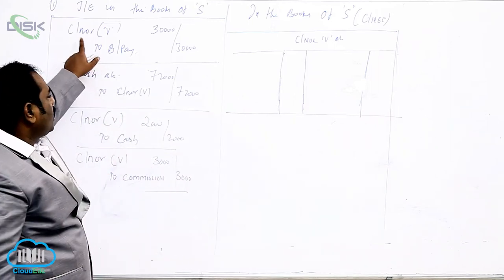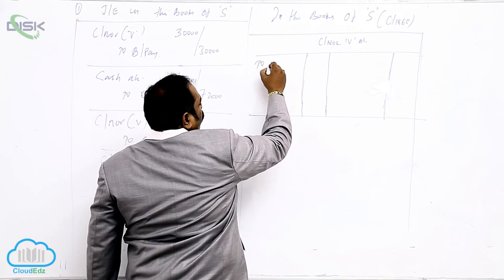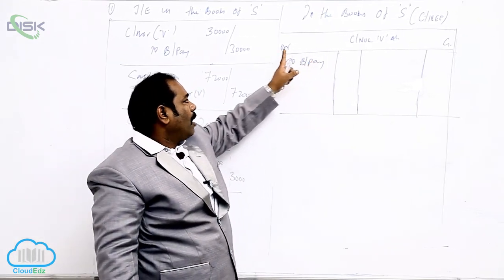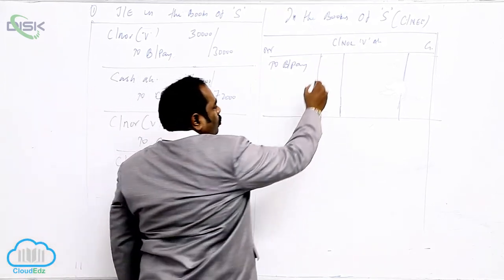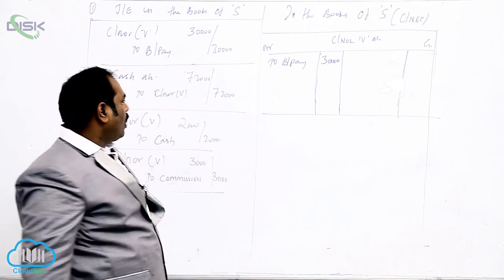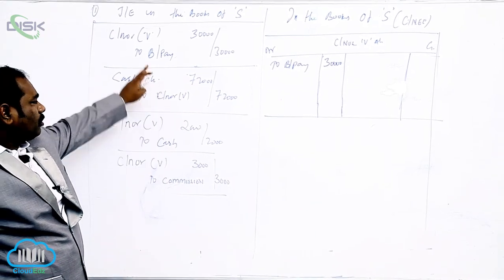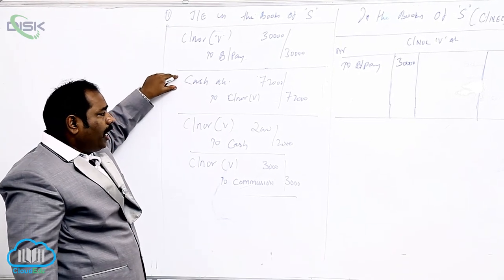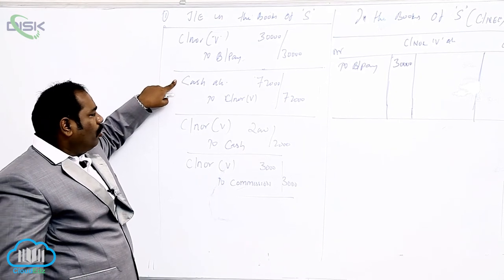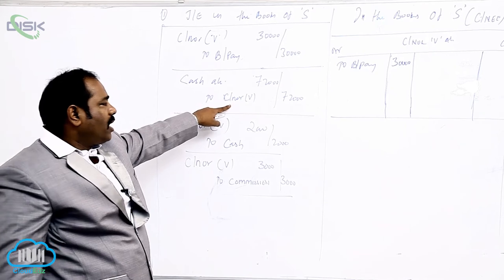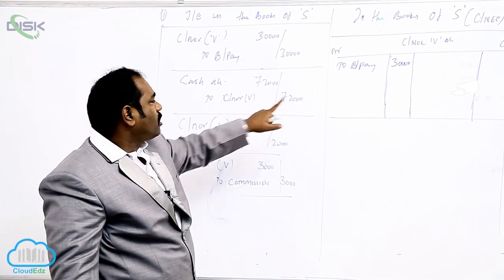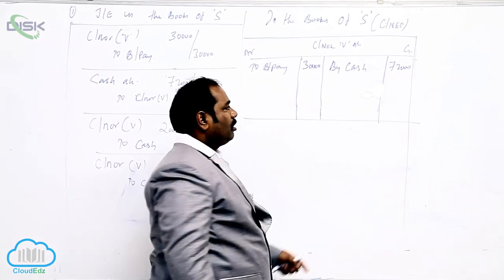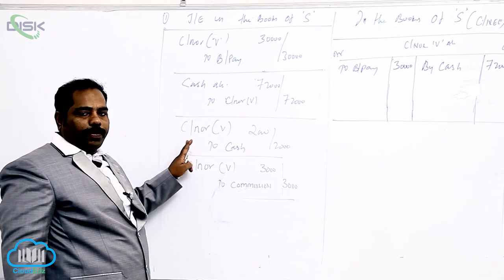In the Consignor's Account, the first entry: Consignor Account Dr to Bills Payable — the debit side shows ₹30,000 for the advance. For cash sales, Cash Account Dr to Consignor — consignor is on the credit side, so write 'By Cash' ₹72,000. For expenses: Consignor Account Dr to Cash — debit side ₹2,000.